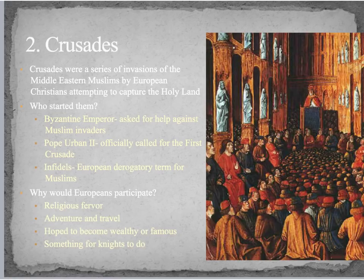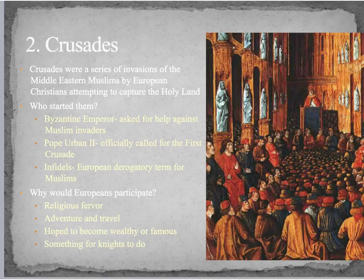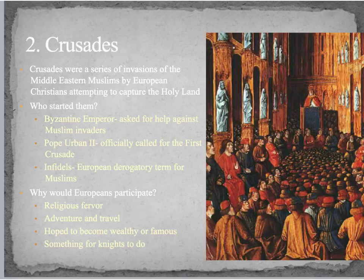The second major thing to know about medieval Europe are the Crusades — what they were and what their impact was. The Crusades were a series of invasions of the Middle Eastern Muslims by European Christians attempting to capture the Holy Land. We learned about the Muslim empires in this region, like the Abbasids. The Christians wanted to come from Europe and take that land over. The Holy Land would be the land around Jerusalem and other holy sites — places that are holy to Judaism, Christianity, and Islam.